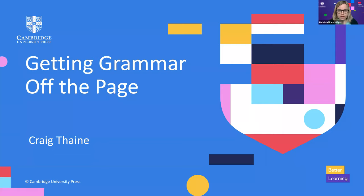Let me introduce Greg. Greg has been involved in ELT for about 30 years, working as a teacher and teacher trainer in many different countries, including England, Italy, Egypt, Sweden, and New Zealand. Greg is a co-author of some Cambridge materials, like the Off the Page book for teachers, and also the general English course Cambridge English Empower. Greg is based in New Zealand, so it's evening where he is right now. So over to you, Greg.